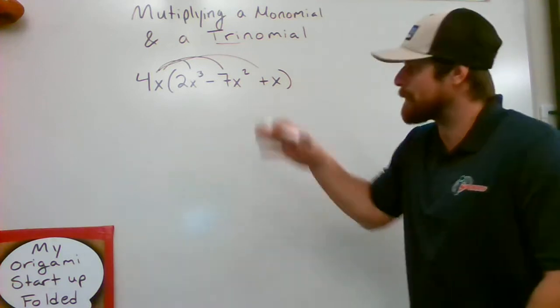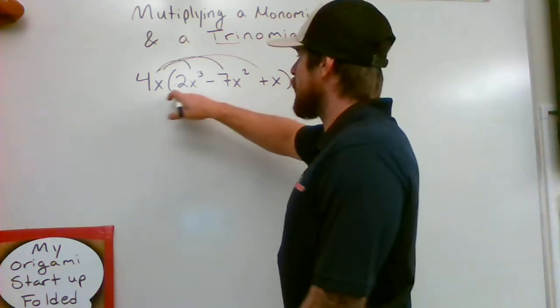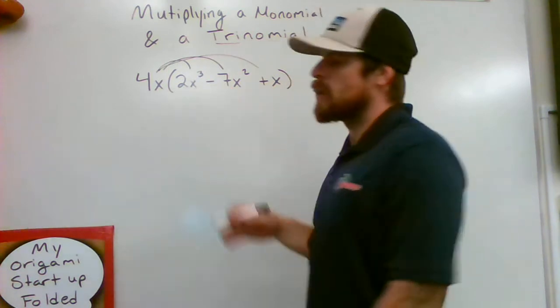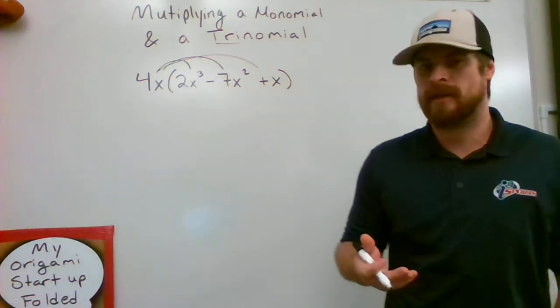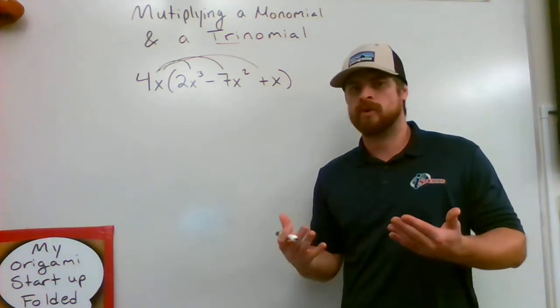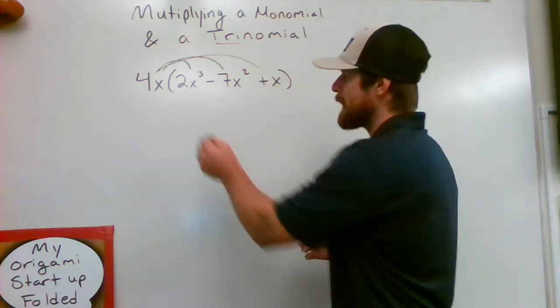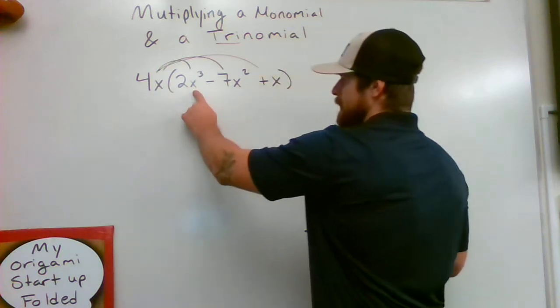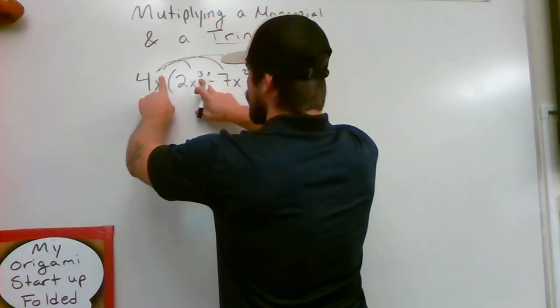Okay, I'm going to show you each and every step in this, but we're going to say 4x times 2x cubed. One rule you need to understand and know is what we learned in our previous chapter with exponent rules. Exponent rules, when you're multiplying bases that are the same, an x and an x, we need to add our exponents.